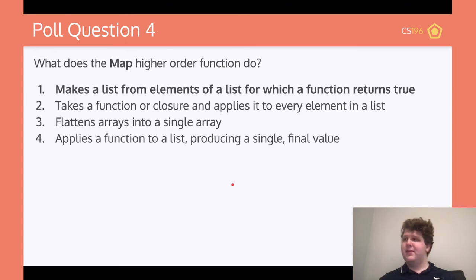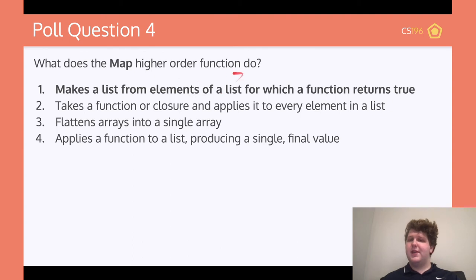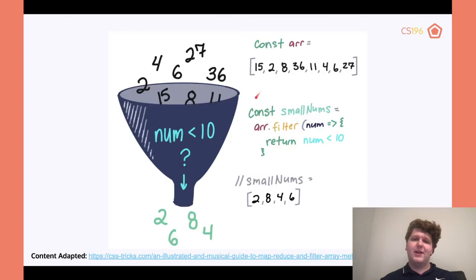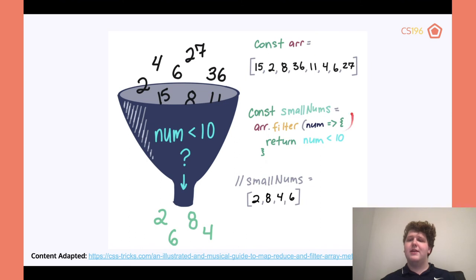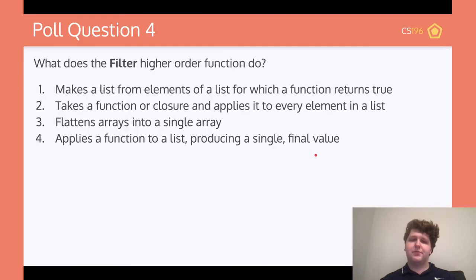The correct answer for this one is one. The filter function is going to make a list from the elements of a list where a function that you give it returns true. If we're filtering by whether a number is less than 10, we take in the entire list, put it through this filter, and we can give it any function — filter if num is greater than 10, filter if num is only equal to 10. This filter will return any of the values that fit this function where you return a Boolean.